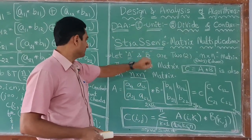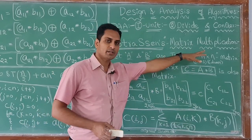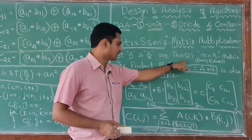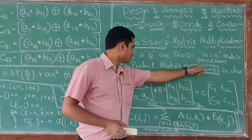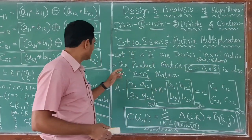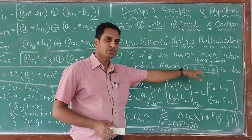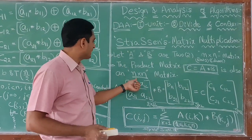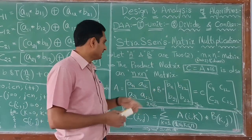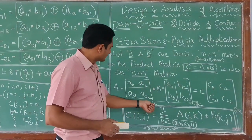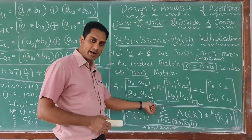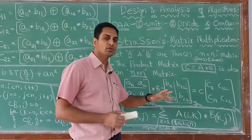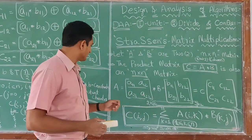Strassen is a scientist's name. Basically, matrix multiplication you know from elementary school. Let A and B be two n by n matrices with rows and columns. The product matrix C is equal to A into B, which is also an n by n matrix. The rule is: the number of columns of the first matrix and rows of the second matrix should be equal — then only we can do matrix multiplication.